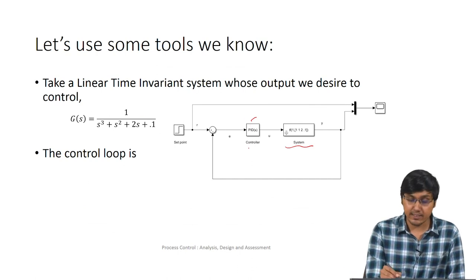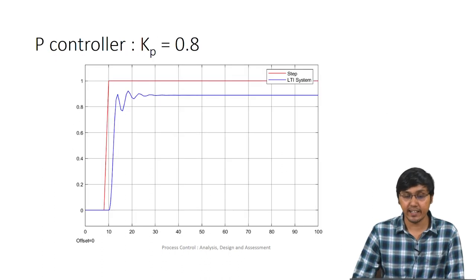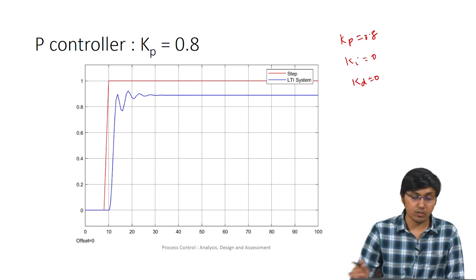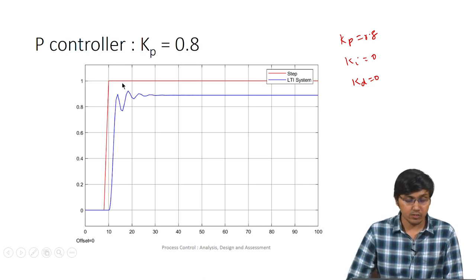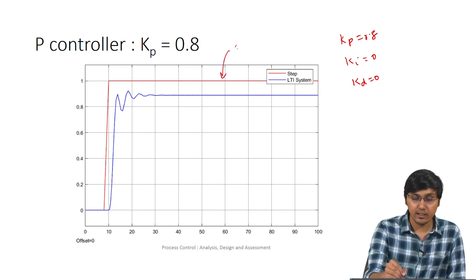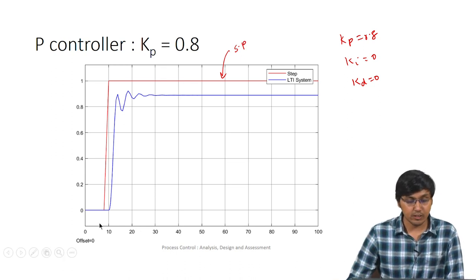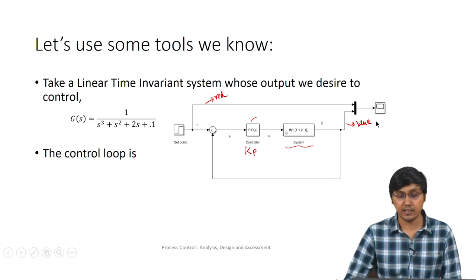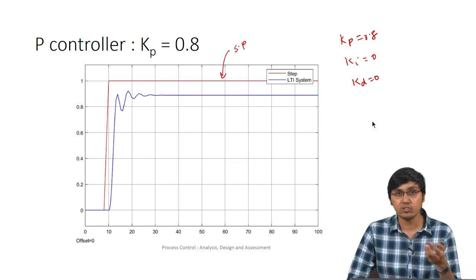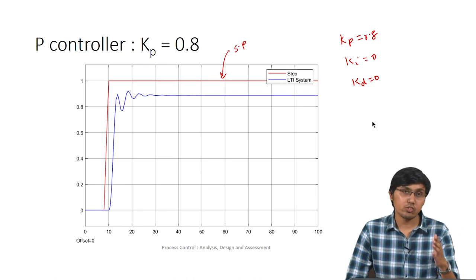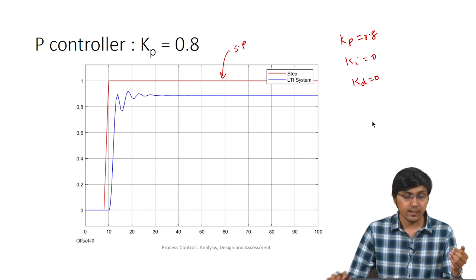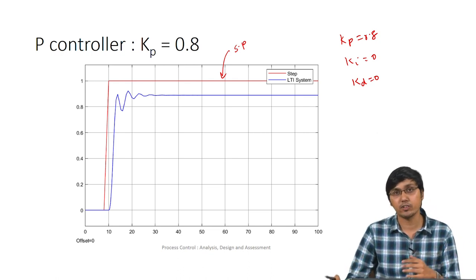When we use a P controller with Kp = 0.8, KI = 0 and KD = 0, and give a step input, the red line is the set point and the blue line is how the controlled variable actually behaves. For a physical system like flow, say going from 3 m³/s to 5 m³/s, we want the change to happen ideally, but the controlled variable changes more slowly and with an offset.